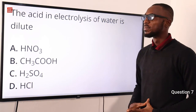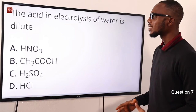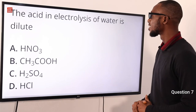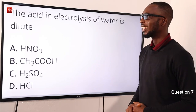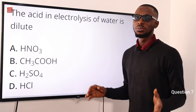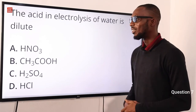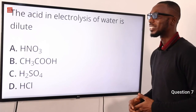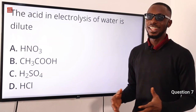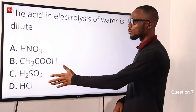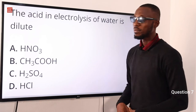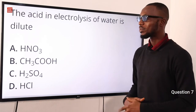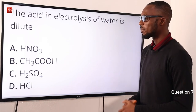Question 7. The acid in the electrolysis of water is dilute what? Talking about the electrolysis of water, the acid there is dilute H2SO4 — dilute sulfuric acid.